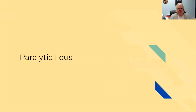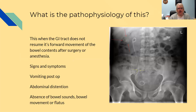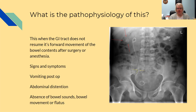Next is paralytic ileus. The pathophysiology is when the GI tract does not resume its forward movement of bowel contents after surgery, anesthesia, or bowel manipulation — when the gut should start having bowel sounds but doesn't. Signs and symptoms include vomiting post-op, abdominal distension, absence of bowel sounds, and failure to pass gas or flatus.